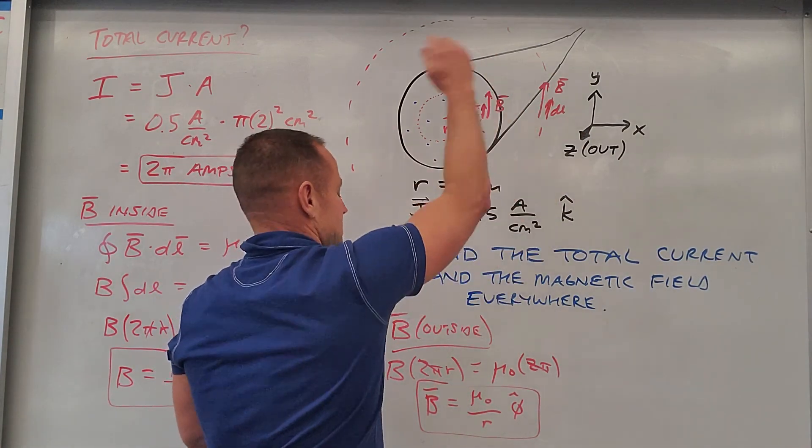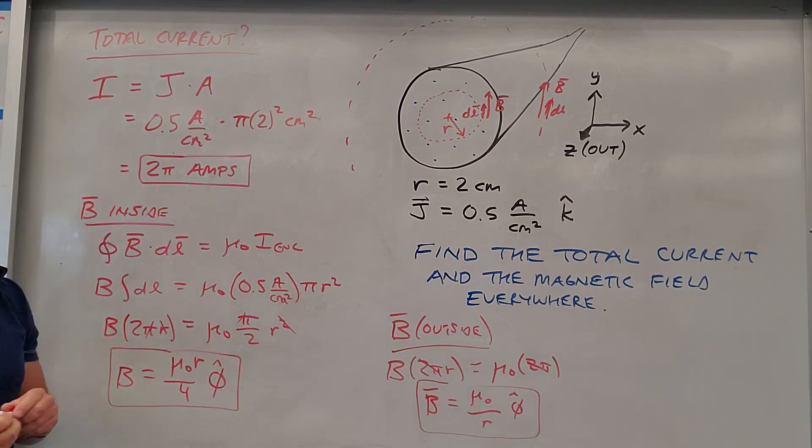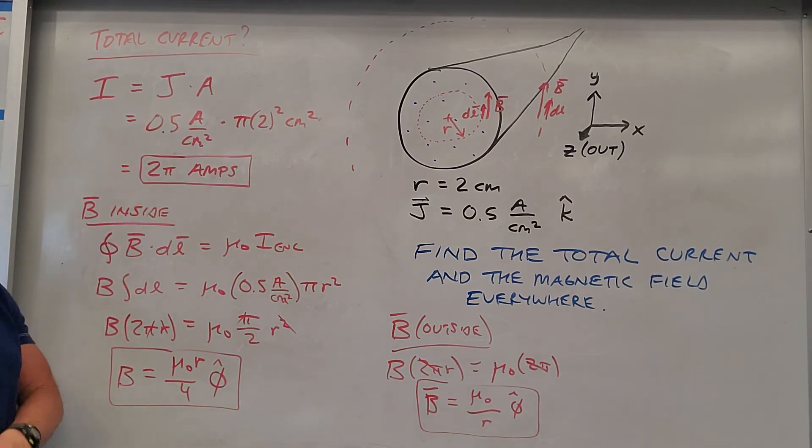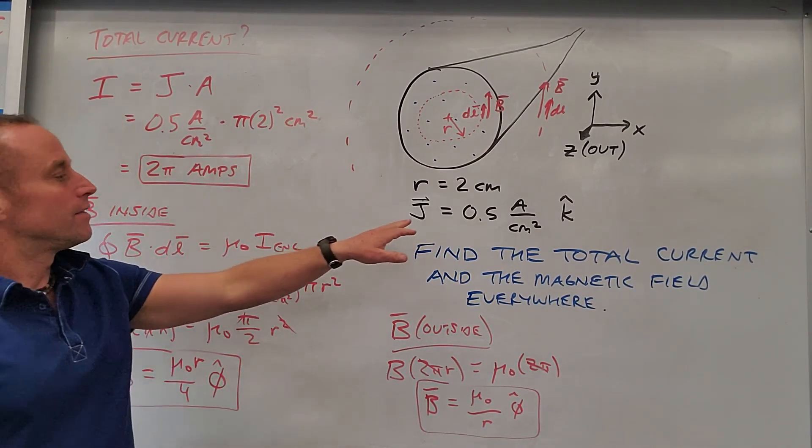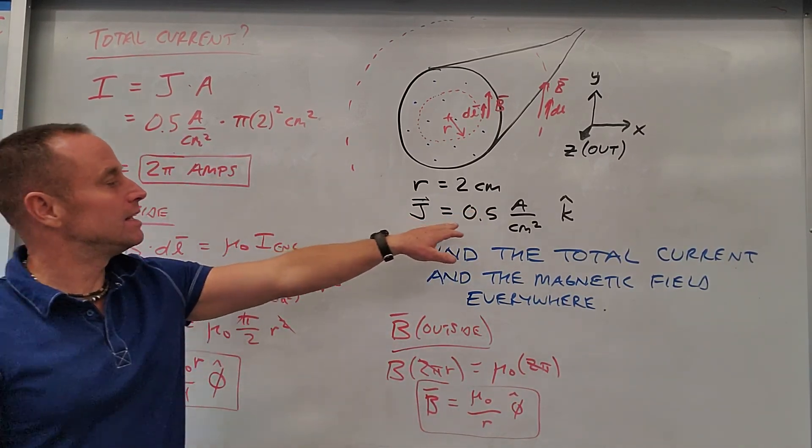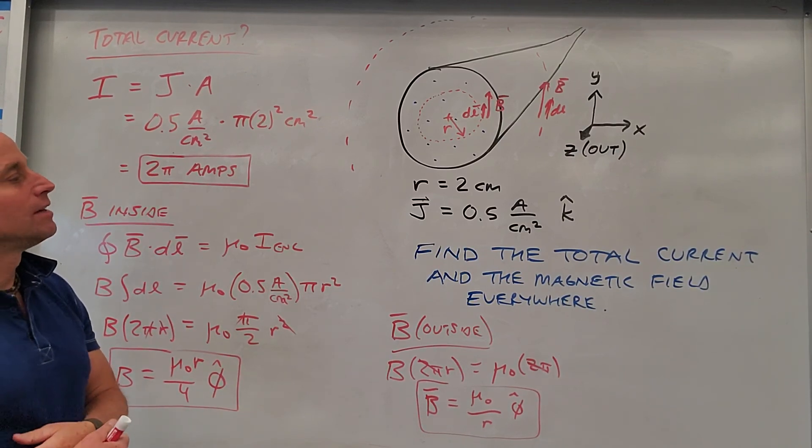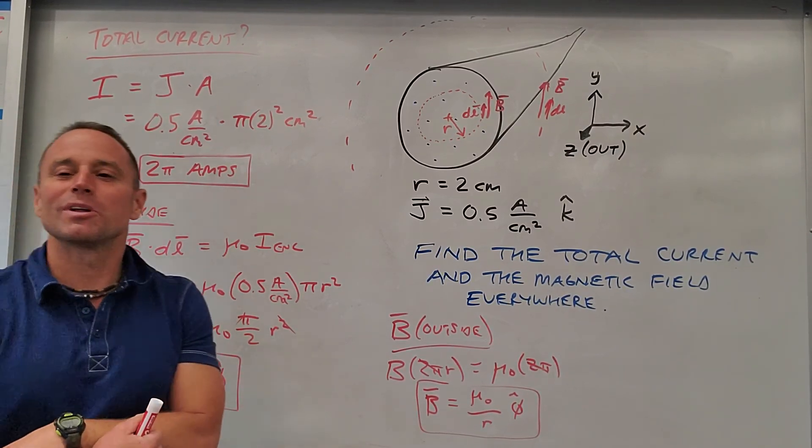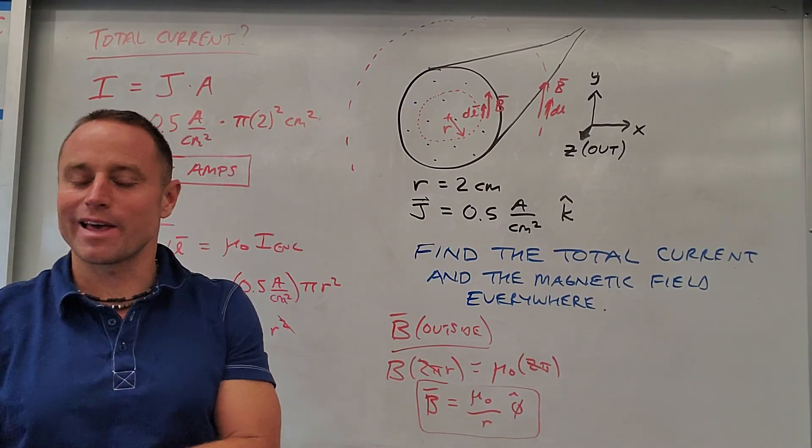swirling clockwise around this thing. So that's our first example using current density and Ampere's law. This was a uniform current density, so we really didn't need to do any fancy math to figure out how much current was in there. Next we'll look at an example where you do have to do that.